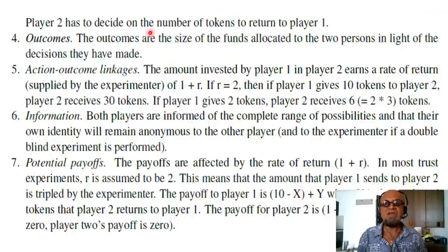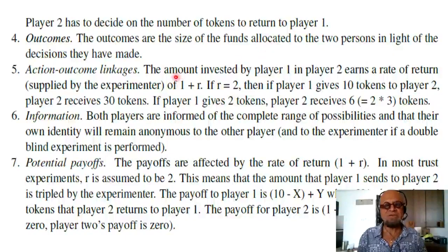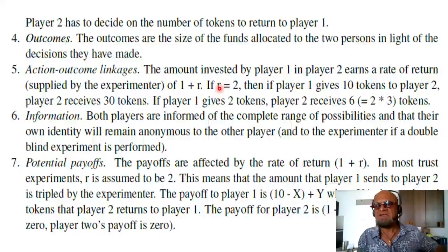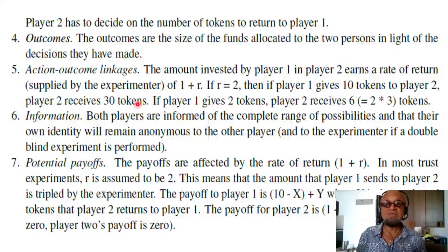Player two has to decide on the number of tokens to return to player one. The outcomes are the size of the funds allocated to the two persons in light of the decisions they have made. Action-outcome linkages: the amount invested by player one in player two earns a rate of return supplied by the experimenter — that is, a multiplier of 1 plus R. So if R is 2 and player one gives 10 tokens, player two receives 30 tokens because 10 plus 2 times 10 equals 30.